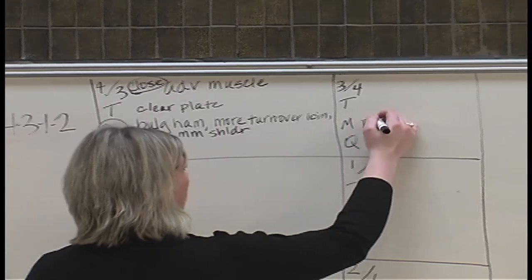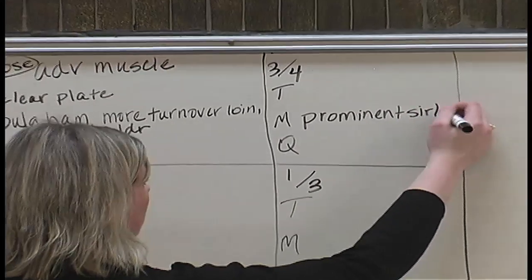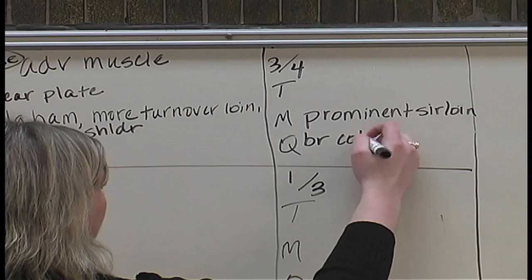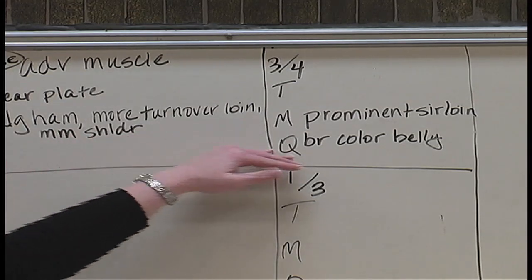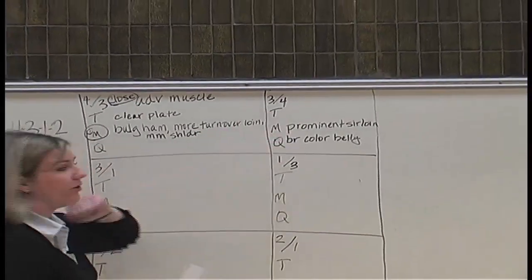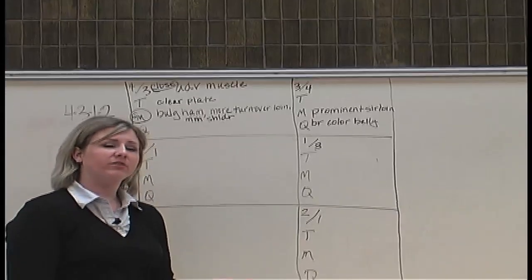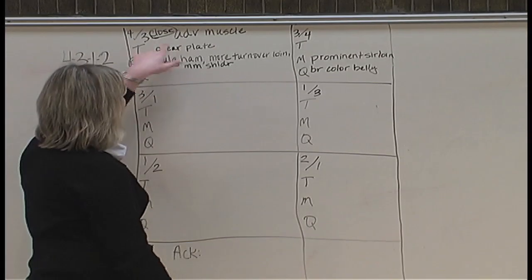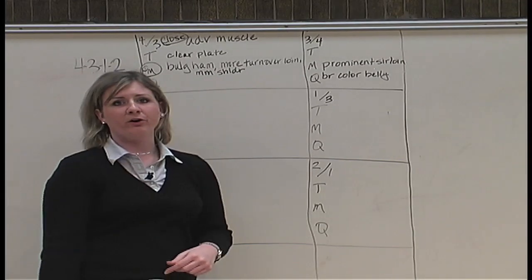Carcass 3 had a more prominent sirloin and also possessed a brighter color of lean in the belly. Once you get done taking those notes, check to make sure there are no other details you might have missed. There's not very many terms separating them in trimness — these two carcasses are very similar in trimness, so we don't want to bring out differences that may not really be there. Muscling was the biggest difference in this pair, which is why muscling terms are listed first in that paragraph.